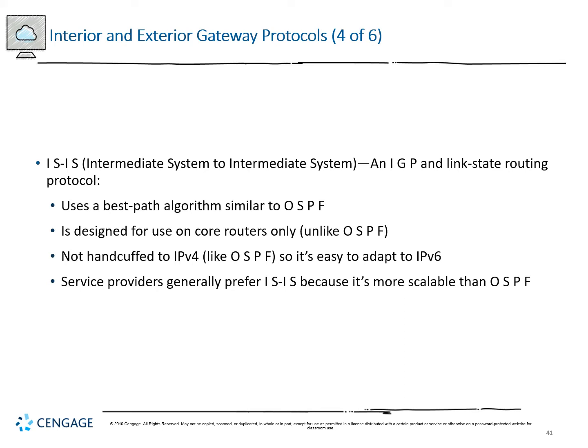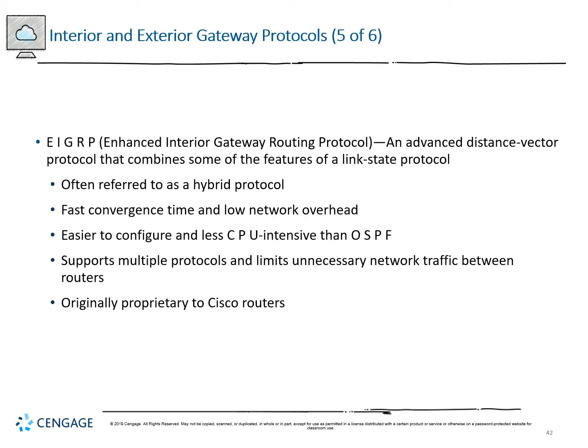IS-IS uses link state routing similar to OSPF but is designed only for core routers. It's not limited to IPv4 like OSPF and is easier to use with IPv6. Service providers generally prefer IS-IS because it's much more scalable. EIGRP — Enhanced Interior Gateway Routing Protocol — is a distance vector protocol that combines features of link state, often referred to as a hybrid protocol. It has fast convergence, very low network overhead, is less CPU intensive, easier to configure, supports multiple protocols, limits unnecessary traffic between routers, and was originally proprietary to Cisco.